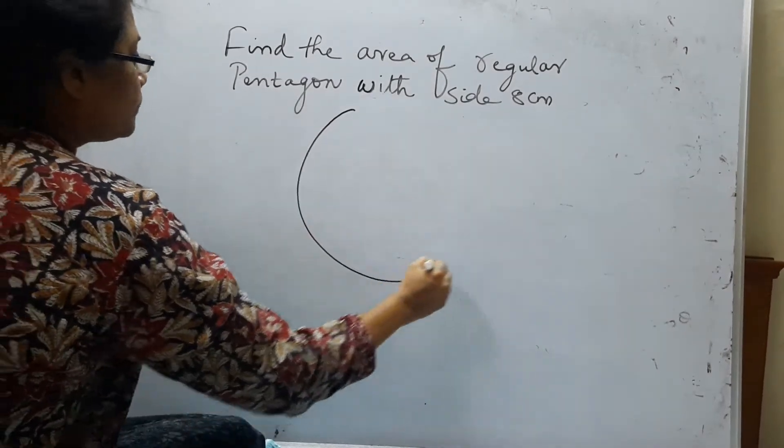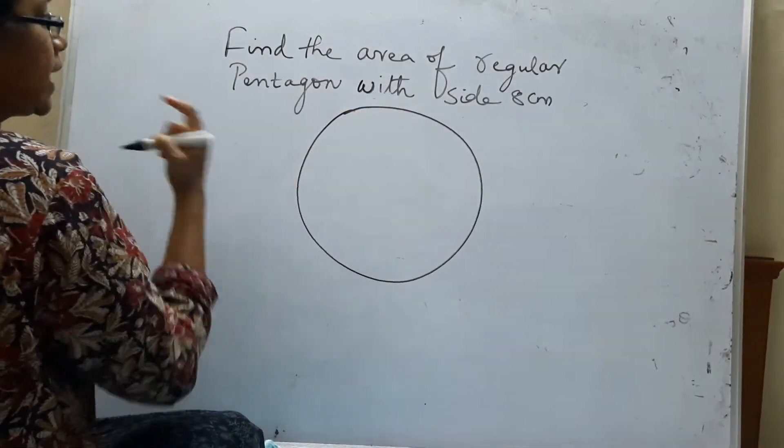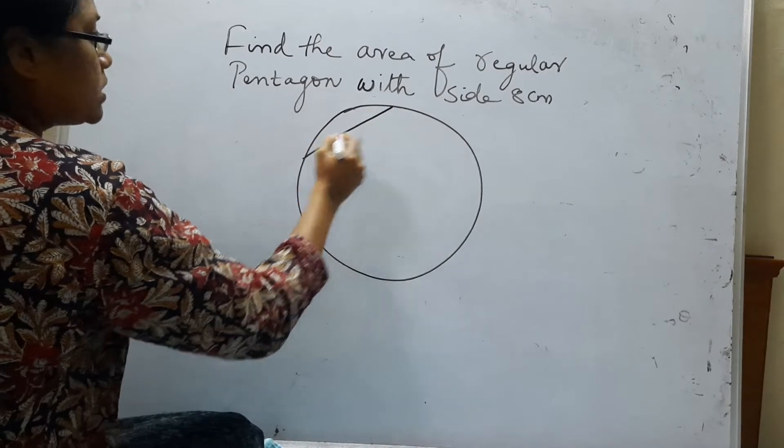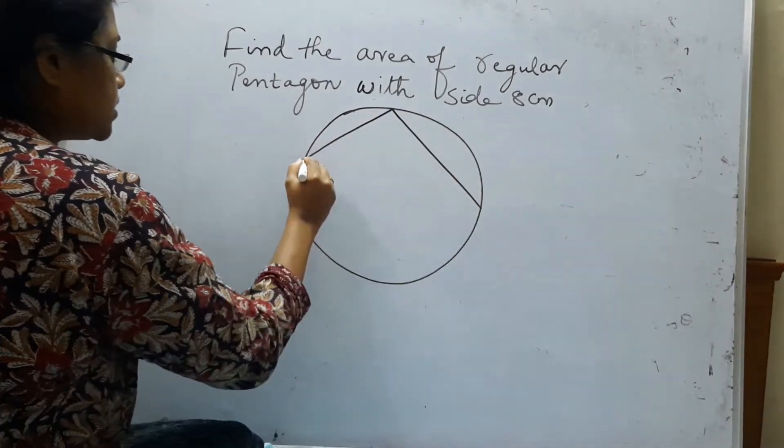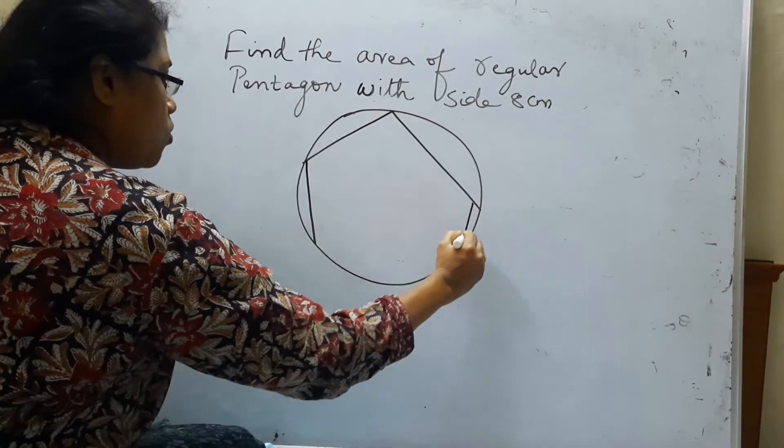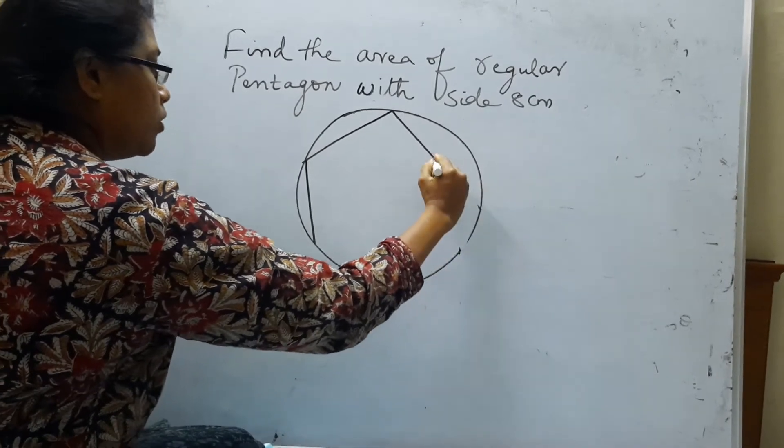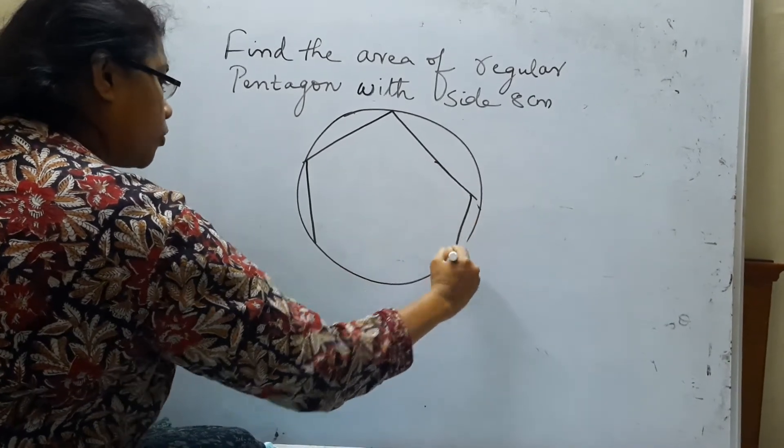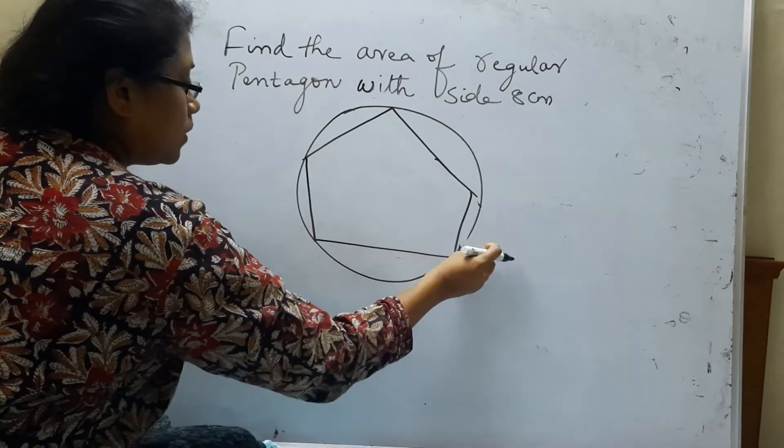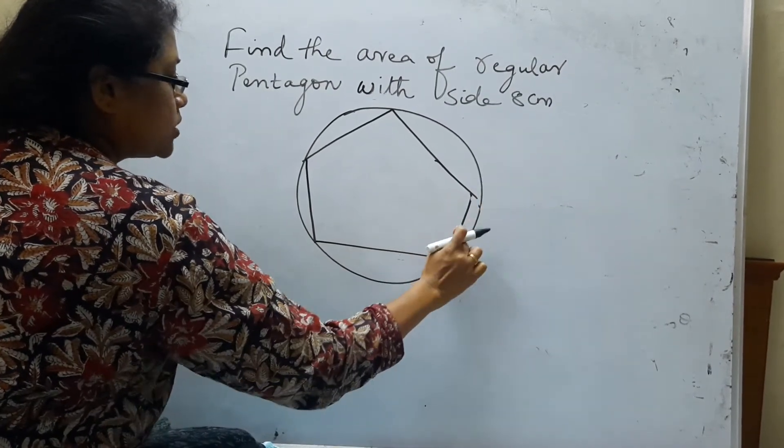First I am going to draw a circle and draw a pentagon inside it. This is one side, second side, third, fourth. Please assume that it is regular only because I don't have a scale to draw. So it's a regular pentagon.